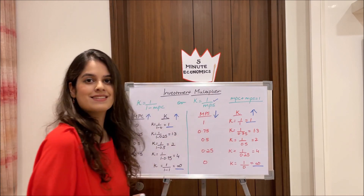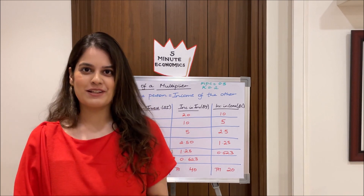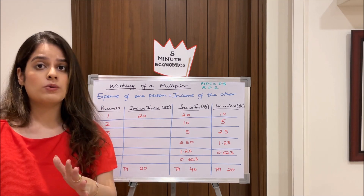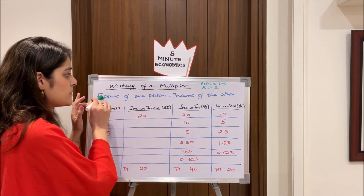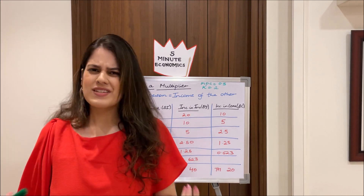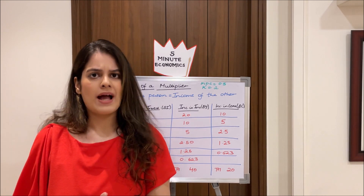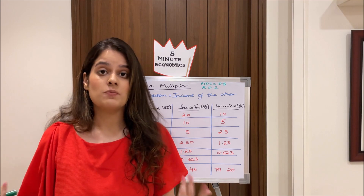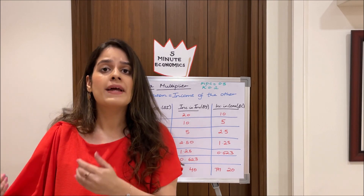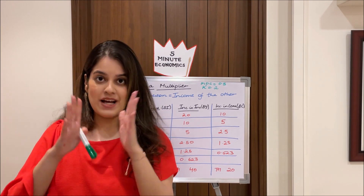Now moving to the most important part — the multiplier mechanism, or working of the multiplier. One key thumb rule: the expense of one person is the income of another. For example, when you go to a grocery store and buy groceries, that is your expense, but for the grocery store owner it is his income. Your expense equals his income — keep this in mind.